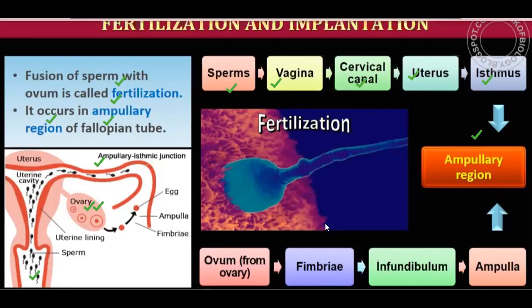The pathway of the ovum is similar. The ovum comes out from the ovary, moves to the fimbriae, then to the infundibulum, and then to the ampulla. When both the ovum and sperm reach the ampullary region, this is the site where fertilization occurs.